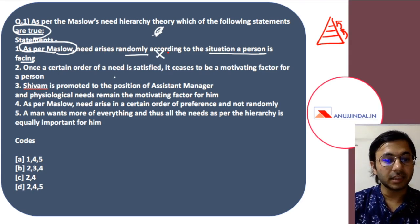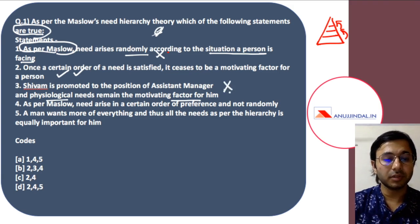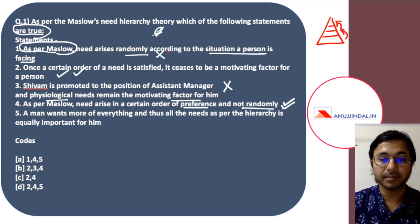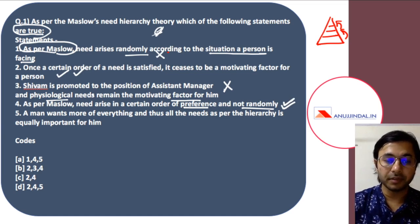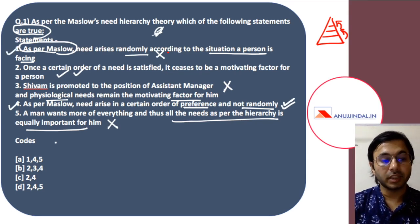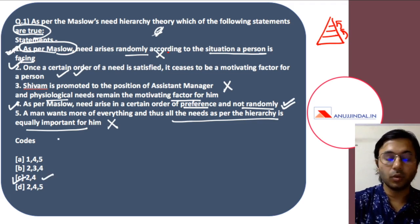Statement two: once a certain order of a need is satisfied, it ceases to be a motivating factor for a person. This is certainly correct and is stated very clearly in Maslow's need hierarchy theory. Statement three: Shivam is promoted to the position of assistant manager and physiological needs remain the motivating factor for him. This is nowhere mentioned in the case study and is therefore incorrect. Statement four: as per Maslow, need arises in a certain order of preference and not randomly — certainly correct. Statement five: a man wants more of everything and all needs are equally important — this does not happen. So the answer is C: statements 2 and 4 are correct.